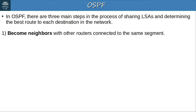An intra-area route is a route to a destination inside the same OSPF area — for example, from a router in area 1 to a destination also in area 1. An inter-area route is a route to a destination in a different OSPF area — for example, if a router in area 1 learns a route to a destination in area 2. Make sure you learn these terms and use flashcards to remember them: area, backbone area, internal router, area-border router, backbone router, intra-area route, and inter-area route.